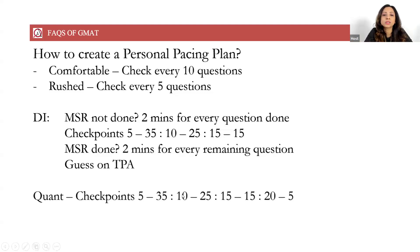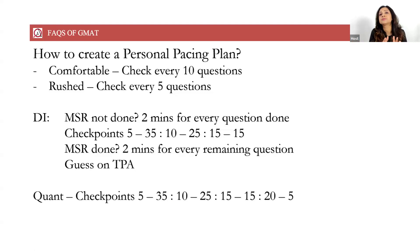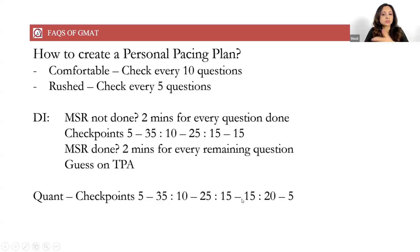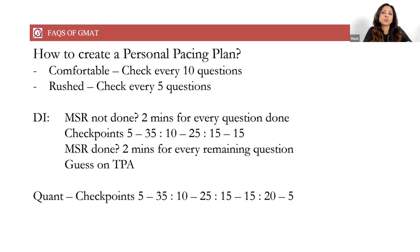Next comes Quant. The checkpoints are the same: aim for two minutes per question. After 5 questions, 35 minutes should be remaining. After 10 questions, 25 minutes should be remaining. After 15 questions, 15 minutes should be remaining. After 20 questions, 5 minutes should be remaining, leaving you with time for the last question and then a couple of minutes to go back to bookmarked questions and review them. A small difference of a minute or two doesn't matter — only if the difference is quite large do you need to guess.